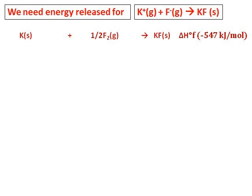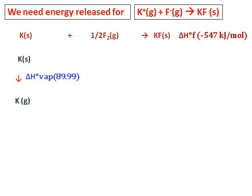Now for the lattice energy equation, I want potassium in the gas state. So I will convert potassium solid to potassium gas, and that heat is the heat of vaporization. Then potassium gas has to be converted into its ion — so I will remove an electron from it, and that is the ionization energy. So I am done with potassium positive now.